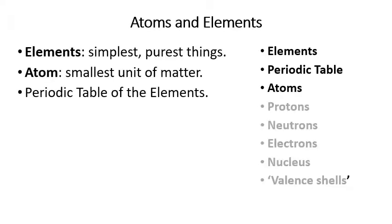Let's find out what atoms and elements are. Elements are the simplest, purest things, and atoms are the smallest units of matter. This started with an ancient Greek philosopher named Democritus, who theorized that if you keep cutting something in half — a half, a quarter, an eighth, a sixteenth — eventually you get to a fragment so small you can't cut it anymore. He called that smallest possible thing an atom. When you atomize something, it means you break it apart into its smallest possible fragments.